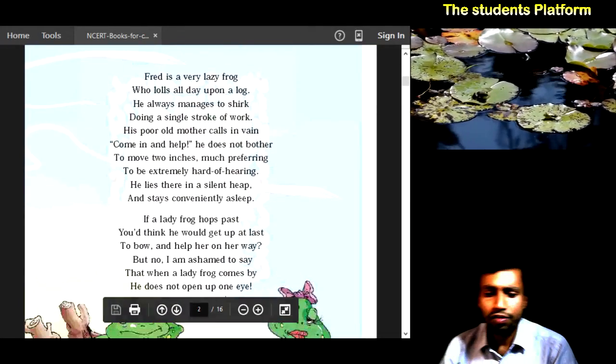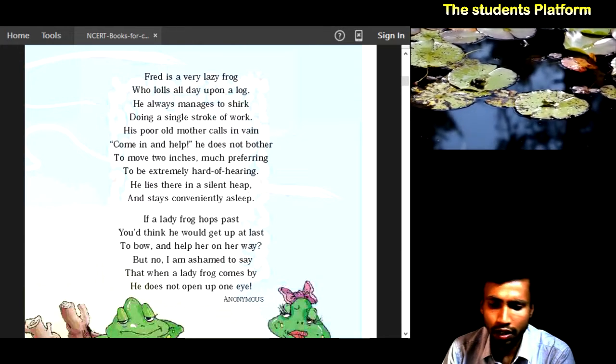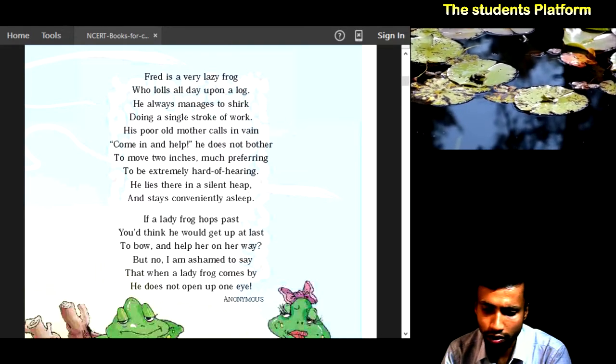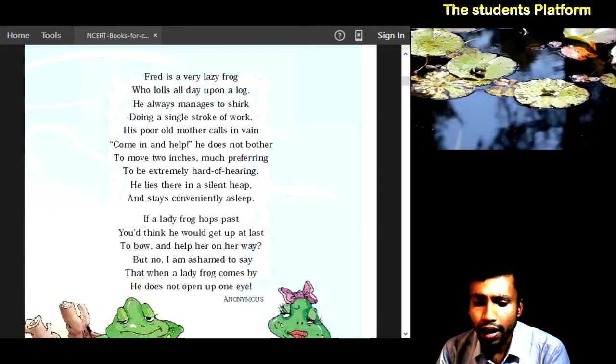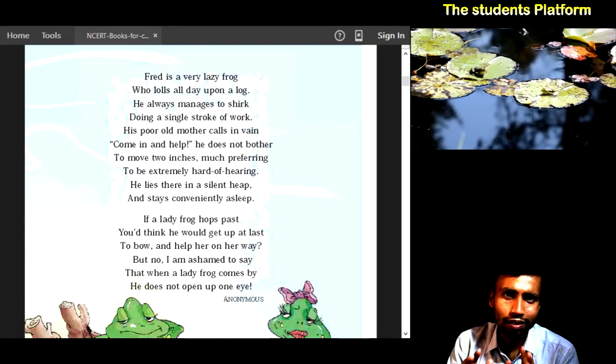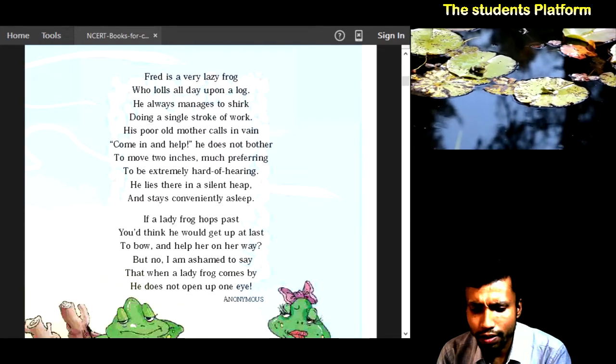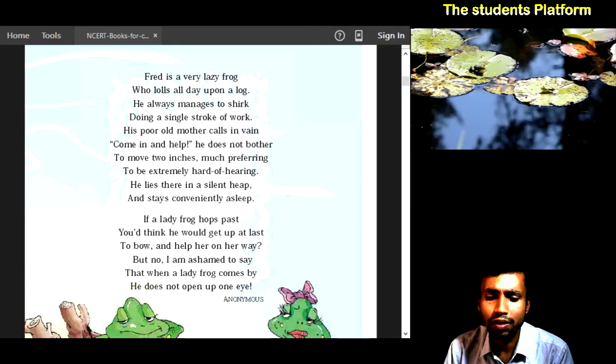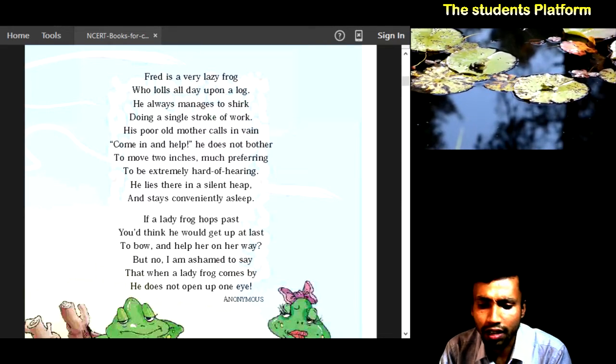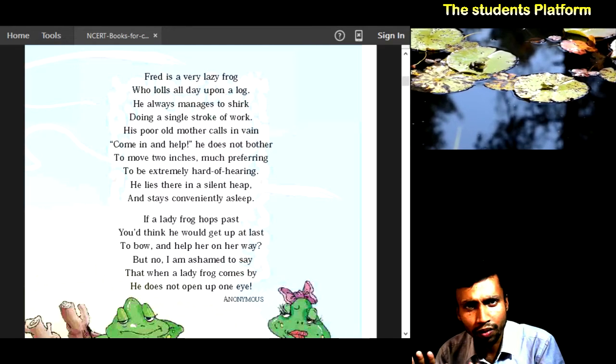Let's start what this poem is saying. In this poem Fred is a very lazy frog who lolls all day upon a log. He always manages to shirk doing a single stroke of work. Koi bhi kaam nahi karna chahte hai. He always manages to shirk - wo hamesha kaam se bachne ka raasta khojte rehte hai. Doing a single stroke of work - koi bhi kaam nahi karna chahte hai. Hamesha kaam churaane ka wo raasta khojte hai.